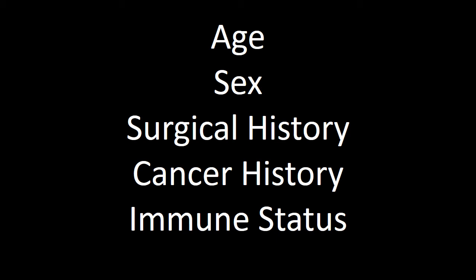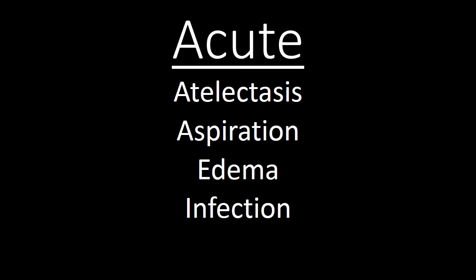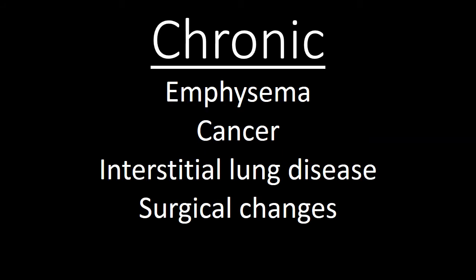In addition to demographics, acuity is often critical. Processes that look very similar will have different presentations, some being acute and others being chronic. Common acute abnormalities seen every day on chest radiographs include atelectasis, aspiration, pulmonary edema, or infection. But on a plain radiograph or chest CT, it can be difficult to distinguish these from chronic processes. When we know someone is presenting with chronic shortness of breath or chronic cough, we focus on a different list of diseases: emphysema, cancer, interstitial lung disease, or changes related to surgery.